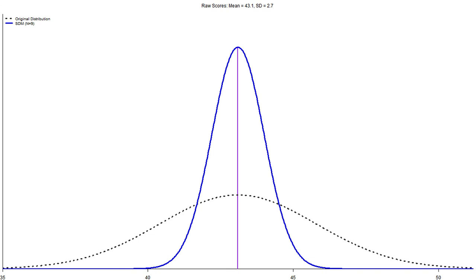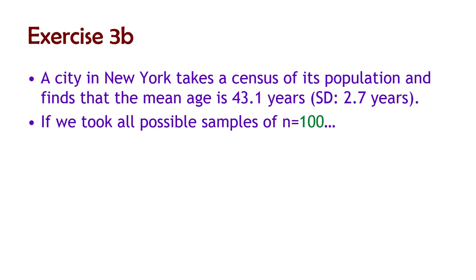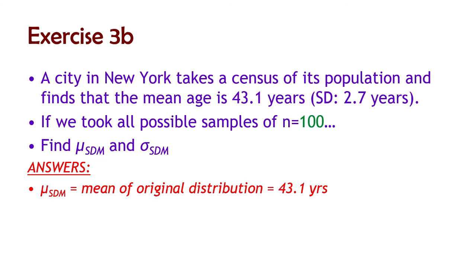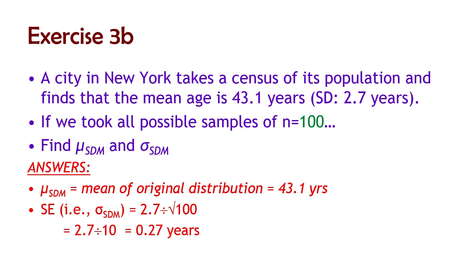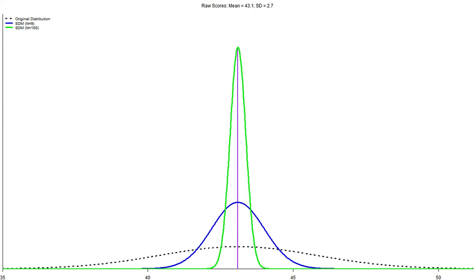The blue line is the sampling distribution and the dashed line is the original distribution. Now with a large sample size of n equals 100: the mean is the same, 43.1 years. The standard error is 2.7 divided by the square root of 100, which is divided by 10, giving 0.27 years — much smaller. Putting both sampling distributions on top of each other, we see how much smaller the n equals 100 distribution is than the original raw scores and even the n equals 9 sampling distribution.